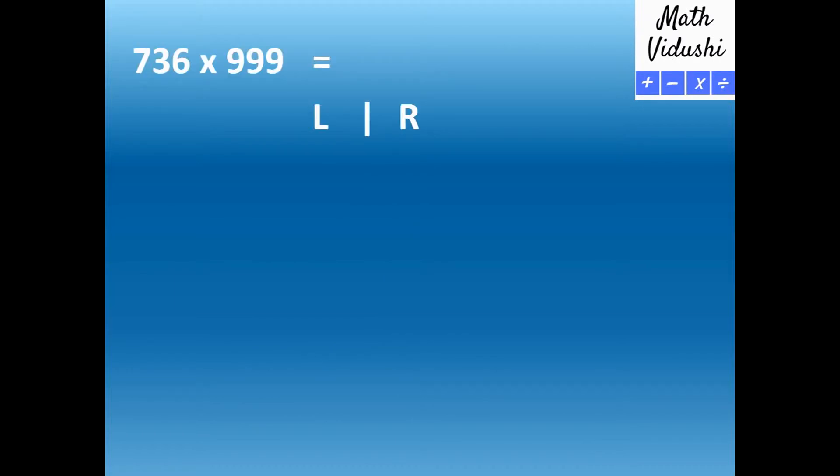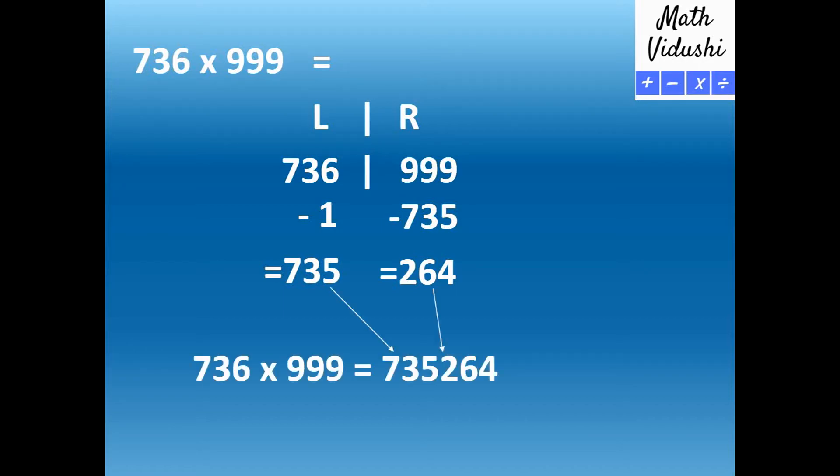736 multiplied by 999—they both have three digits each. So 736 minus 1 is the left part of the answer, that is 735. The right part of the answer is 999 minus 735, which is 264. Now you just combine the two parts of the answer and you would get 736 multiplied by 999 is 735264.